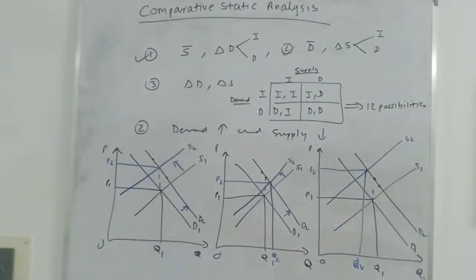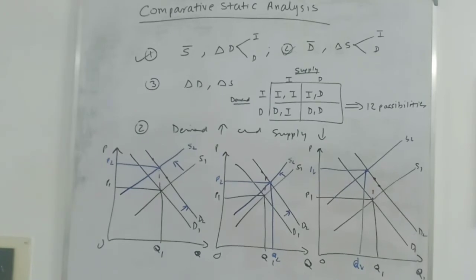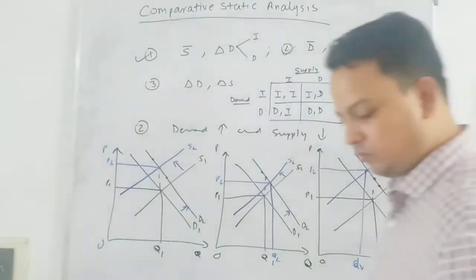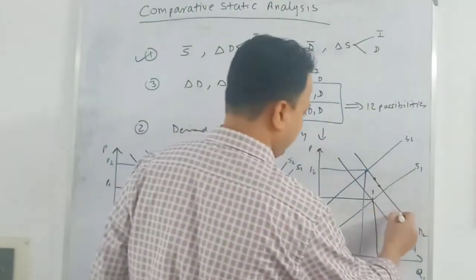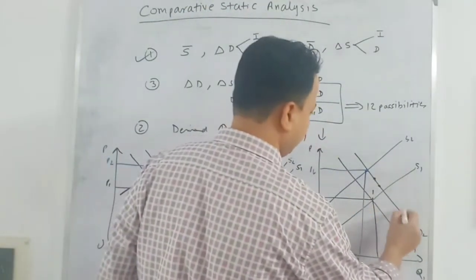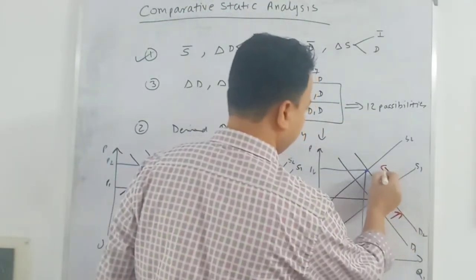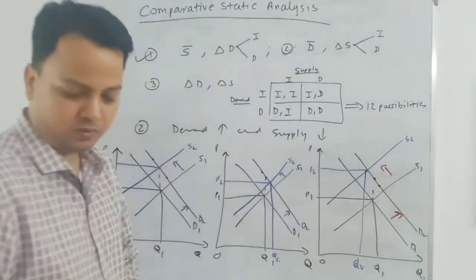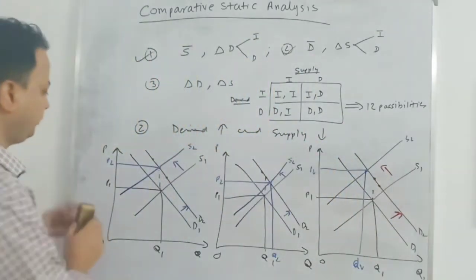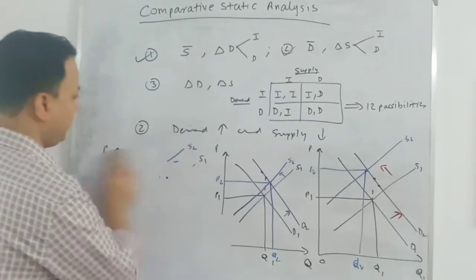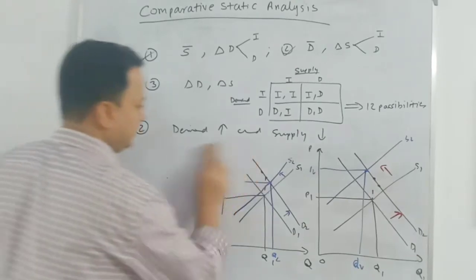This is the second case. When demand increases and supply decreases, at the new equilibrium in this comparative static analysis, price will be higher. At the new equilibrium quantity can remain the same, it can be higher, or it can be lower.